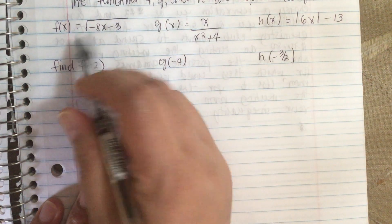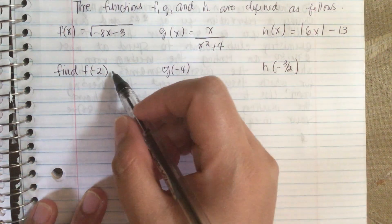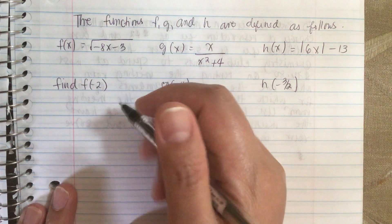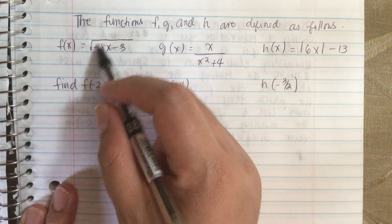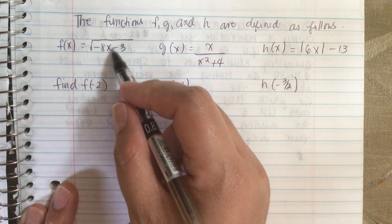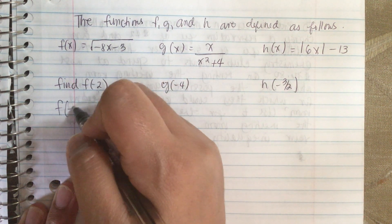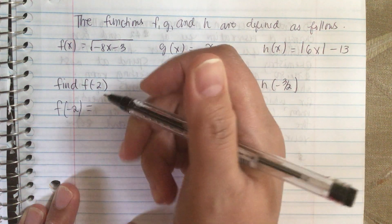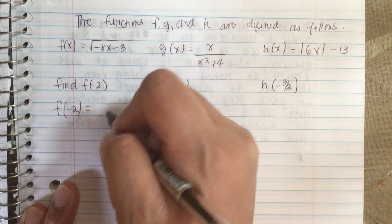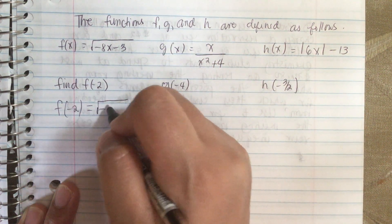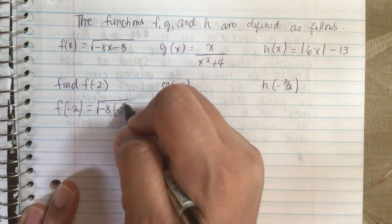So first let's do f of x. Basically we just plug in the number, put it inside this square root. Whenever we see an x, we put in -2. So f of -2 is equal to the square root of -8 times -2